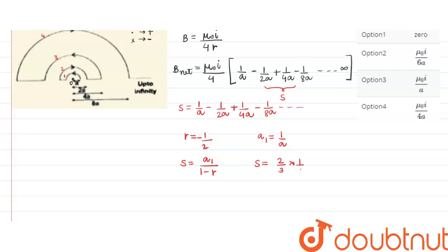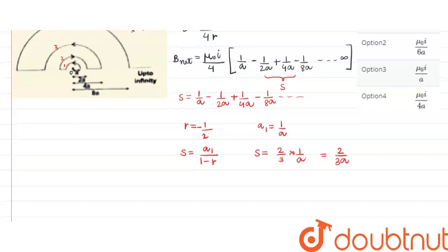Now putting the value of S in the B_net equation, we get B_net = μ₀i/4 × 2/(3a).